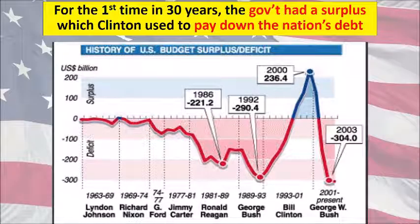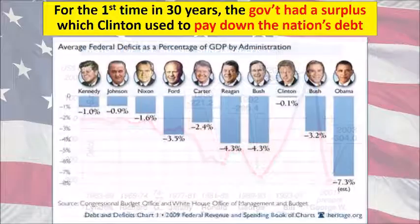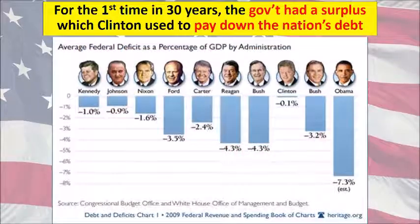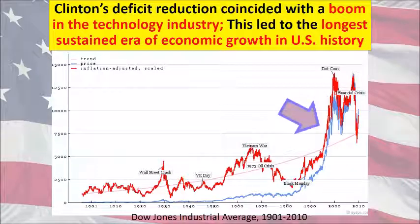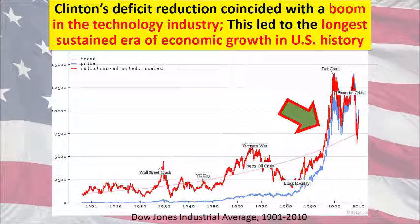In 1997, Clinton cut government spending and lowered taxes significantly — the first time in 30 years the government had a surplus, which Clinton used to pay down the national debt. Looking at deficits as a percentage of GDP by administration, Clinton was very successful. His deficit reduction coincided with a boom in the technology industry, leading to the longest sustained era of economic growth in U.S. history.